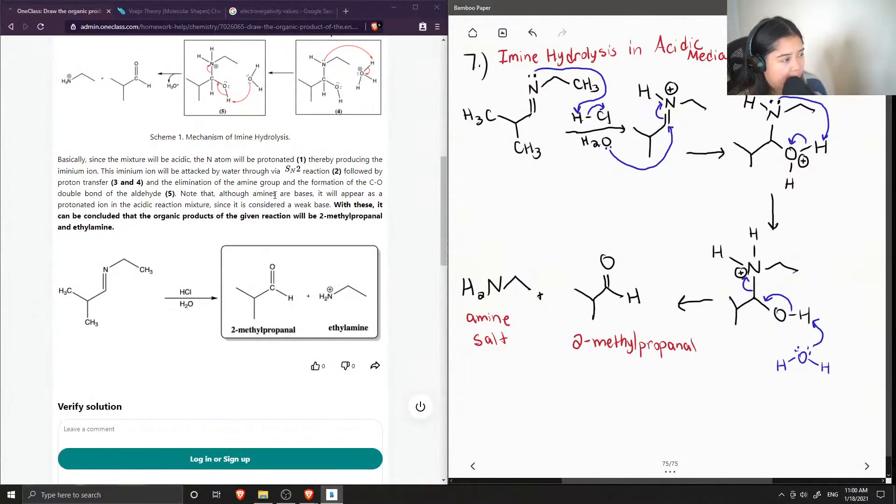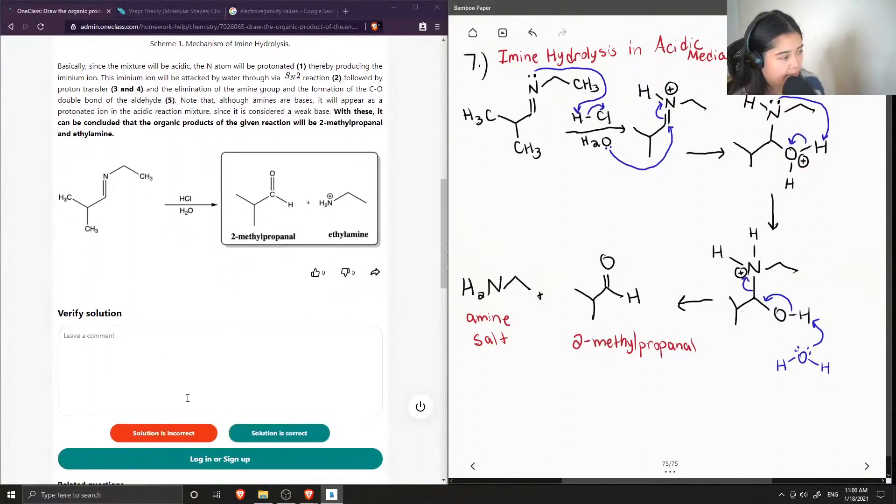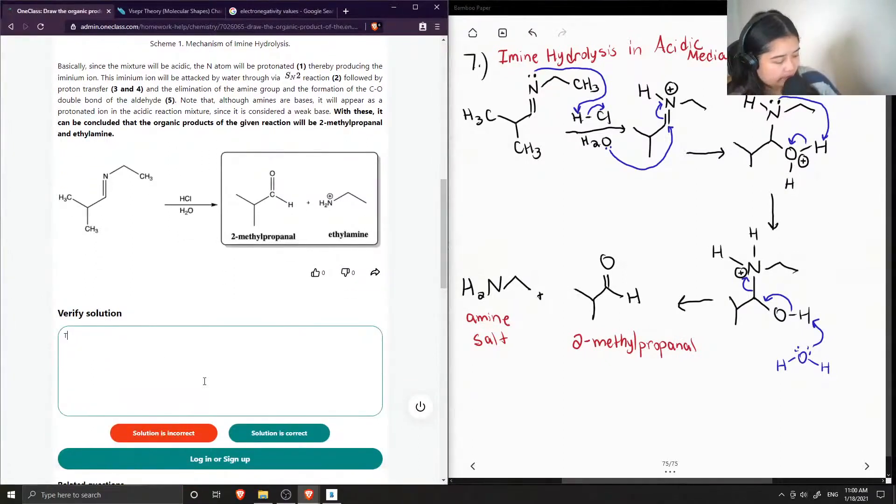And note that although amines are bases, it will appear as a protonated ion in the acidic reaction mixture since it's considered a weak base. Okay, so that's another thing. And with these, it can be concluded that the organic products of the given reaction will be 2-methylpropanal and ethylamine. Okay, so the solution is correct.